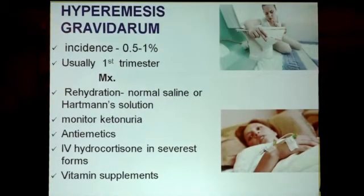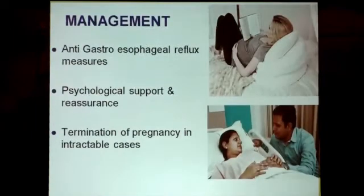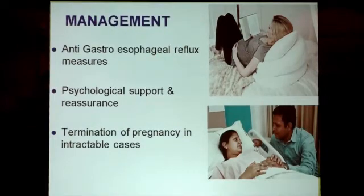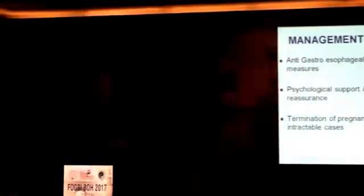Hyperemesis gravidarum rarely causes jaundice, with an incidence of 0.5 to 1%, usually occurring in the first trimester. Management includes rehydration with normal saline or Hartmann's solution, monitoring ketonuria, antiemetics, IV hydrocortisone, and vitamin supplementation. Anti-gastroesophageal reflux measures include elevating the head end, short bland frequent meals, and H2 antagonists. Psychological support and reassurance — a very neglected part in our Indian setup — has to be done.